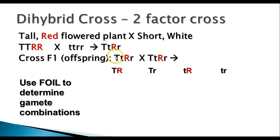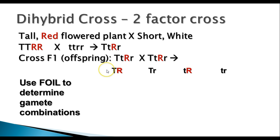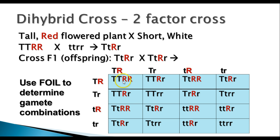What you're going to do is look at the parent and take the first one of each pair — the big T and the big R. Then the outside ones: big T and little r. Then the inside ones: little t and big R. And the last ones in each pair: little t and little r. These are the four possible gamete combinations that each parent can produce, and we're going to have the same ones in both parents.